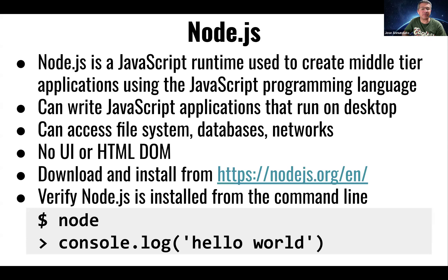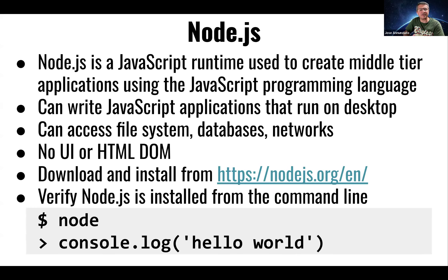Obviously, because it's running outside of the browser, you no longer have access to interact with the browser — no buttons, no DOM. But even though you lose that capability, you can do a whole bunch of other things. Since you can run it from the command line inside your operating system, you have access to the file system, connecting to a database, and connecting to a network. That's exactly what we're going to do — build a server that can listen for incoming requests from the React.js client, fulfill those requests, and respond back.